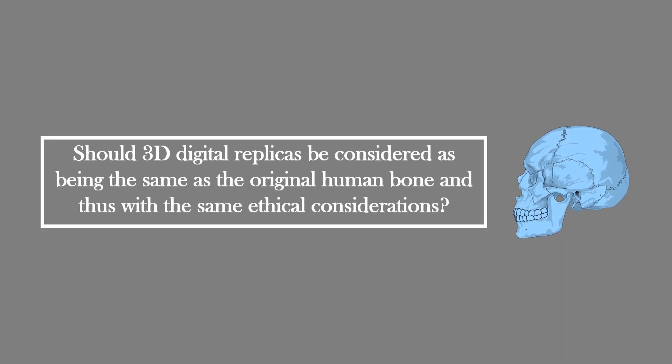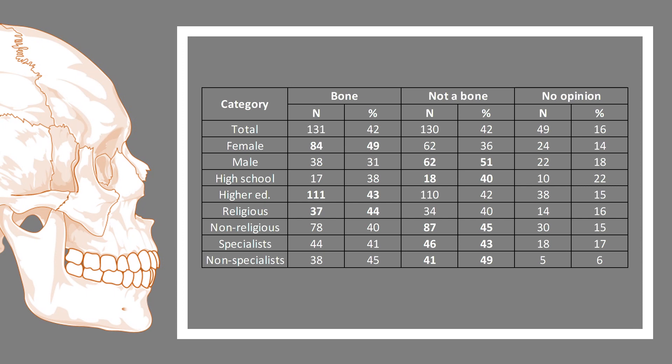Should 3D digital replicas be considered the same as the original human bone, and thus subject to the same ethical considerations? Opinions divided regarding the status of 3D models: 42% saw them as the same as a bone, while another 42% regarded them as being different. Opinions diverged according to gender, age, religion, and education. Most females saw it as being the same as a bone, while males considered it as different. Individuals with a high school diploma or lower saw the 3D model as not being a bone, while participants with higher education held opposing opinions. Individuals with a religion considered it the same, and non-religious participants as being different. Both specialists and non-specialists agreed that the 3D models are not the same as the human bone. Participants without an opinion on the matter were older than the other participants.